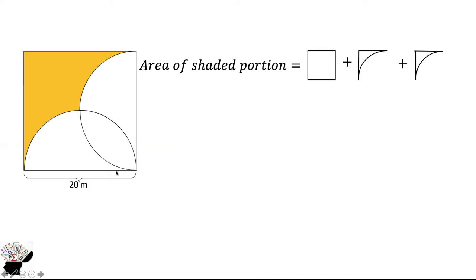Both semicircles are of the same length, and since they intersect at a point, the distance from the point of intersection would be half the distance of the whole diameter. So we are going to get the radius, which will be 10 meters. When we find the area of this smaller square plus the area of these arc shapes, we are going to get the area of the shaded portion.